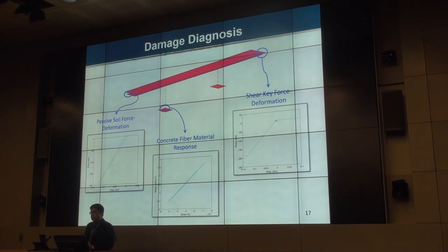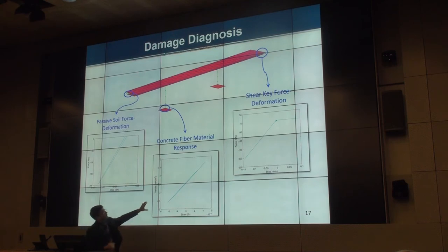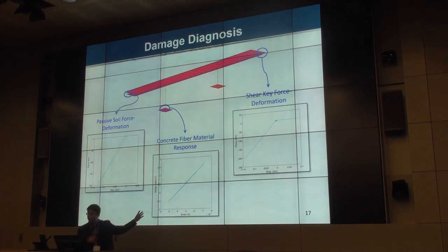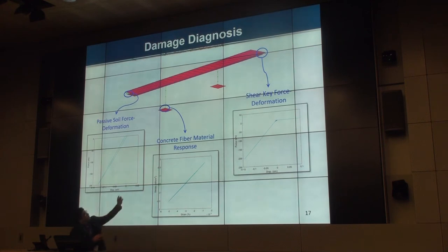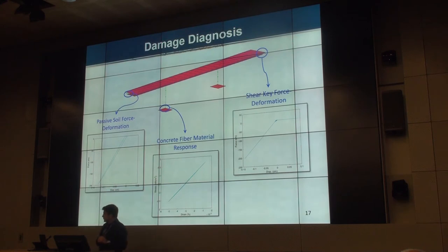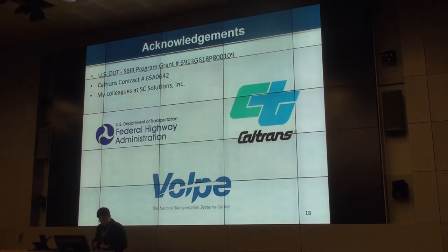We can now use the final updated model for damage identification to help stakeholders. For example, we can look at the stress-strain response of one of the extreme fibers in the pier of the concrete. This level of earthquake was very small so we don't see a lot of nonlinearity, but the same concept can be applied to larger earthquakes where significant nonlinearity would be visible, allowing us to localize damage at the material level. We can also look at shear key force-deformation at the top of the abutment and passive soil force-deformation — information that is very hard or impossible to measure directly with sensors.